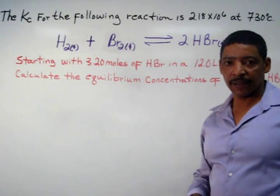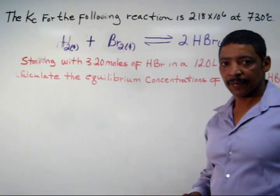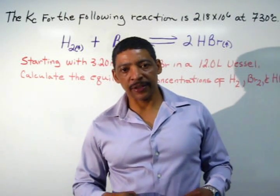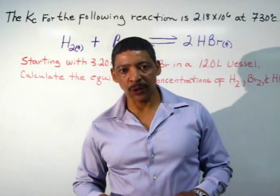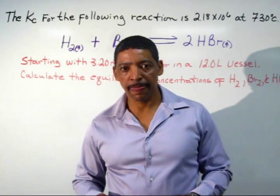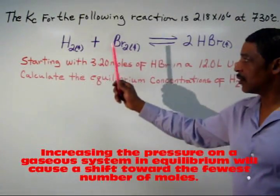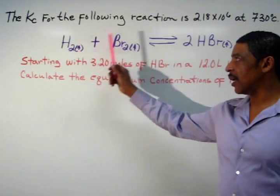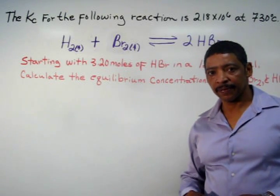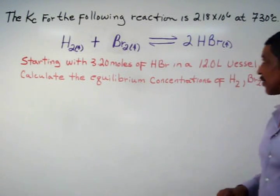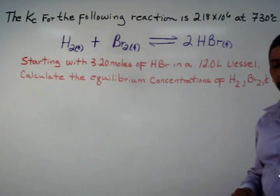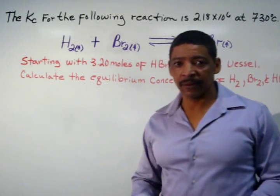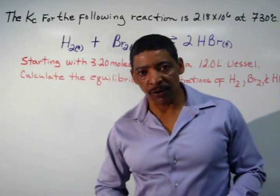For a gaseous system at equilibrium, increasing the pressure favors the direction of the fewest number of moles. In this case, there are two moles of reactants — one mole of hydrogen gas and one mole of bromine gas. On the product side, there are two moles of HBr. Therefore, increasing the pressure on this particular system has no overall effect.